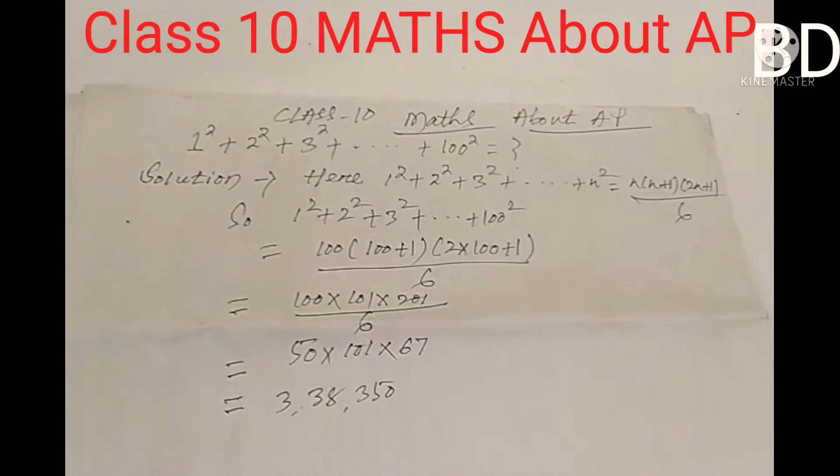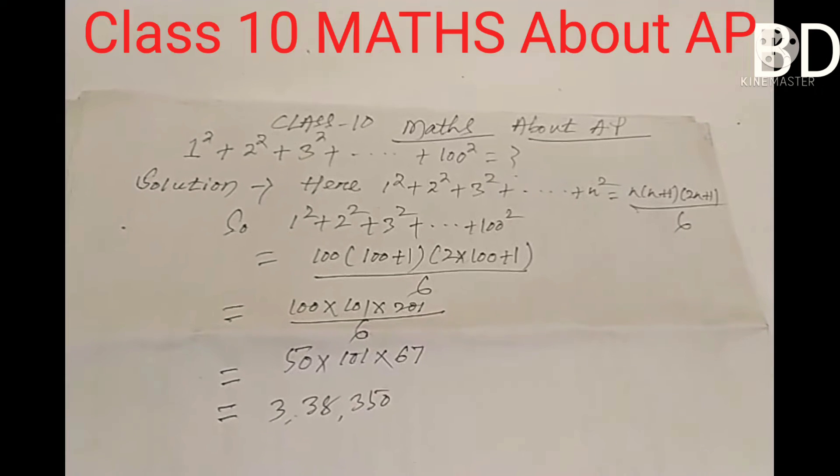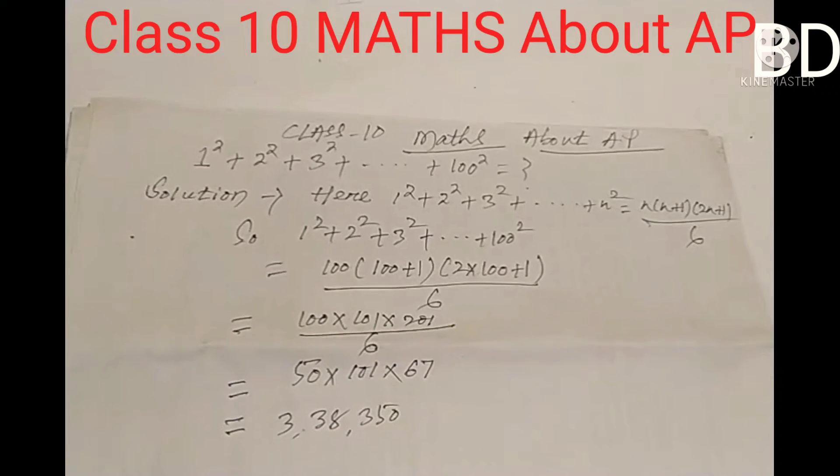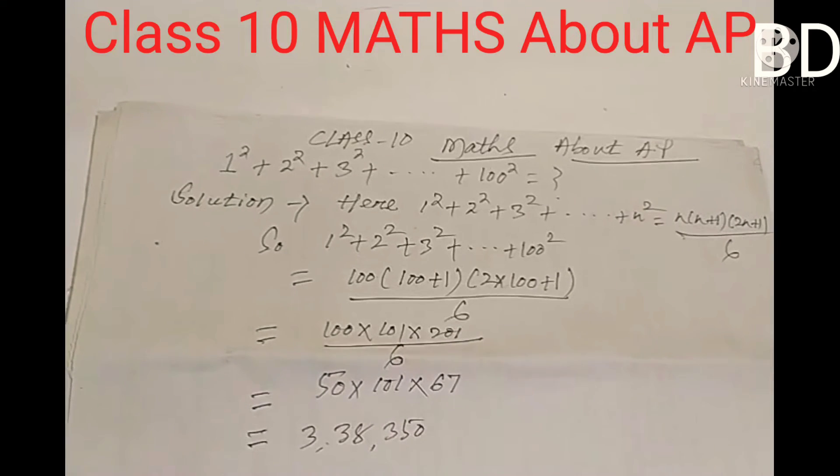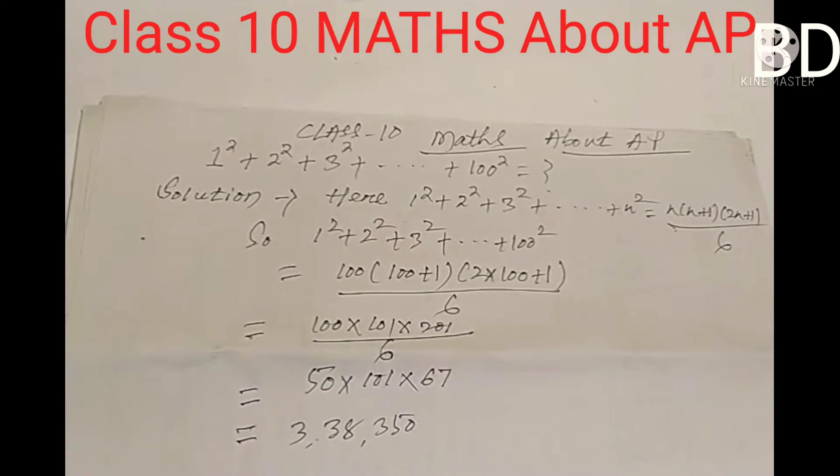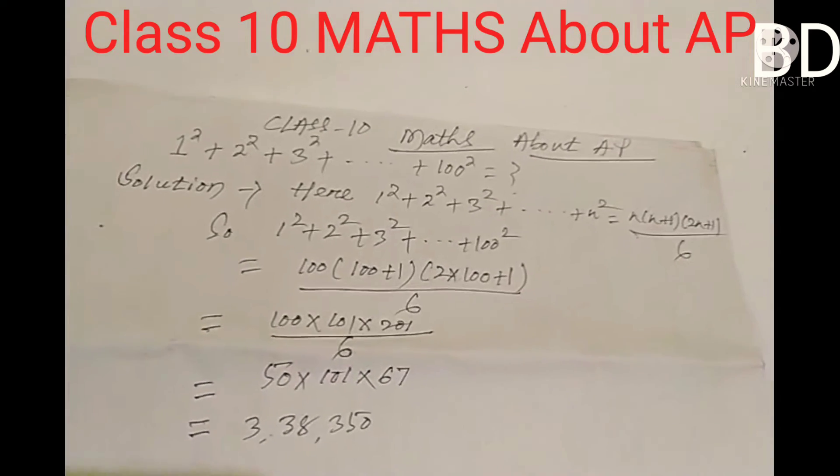Hello everyone from BD Teaching Channel. Today we will discuss mathematics for 10th class students about arithmetic progression. The problem is: 1 squared plus 2 squared plus 3 squared plus dot dot dot plus 100 squared equals what? The solution will be here.